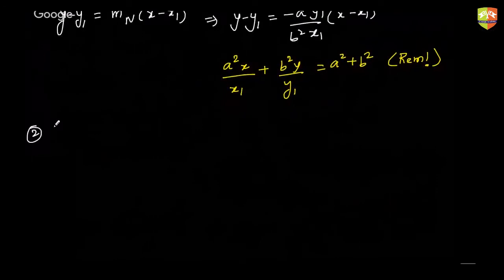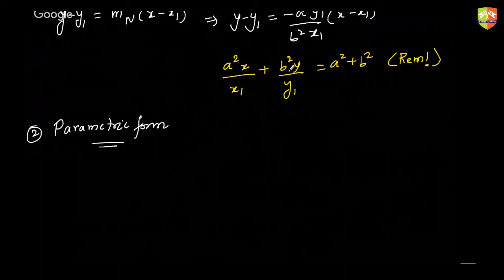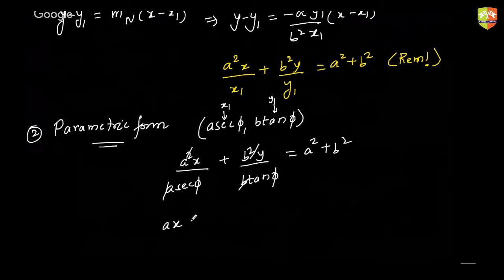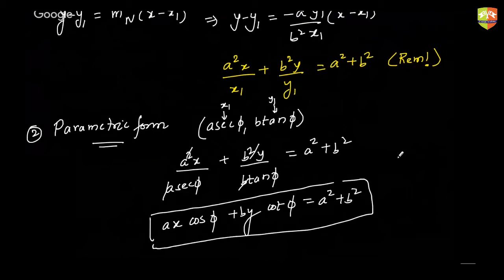Using this result for the parametric form: instead of x₁ and y₁, we find the normal at point (a·sec φ, b·tan φ). Replace x₁ with a·sec φ and y₁ with b·tan φ in the point form equation. Simplifying gives: a·x·cos φ + b·y·cot φ = a² + b². This is the equation of the normal in the parametric form.